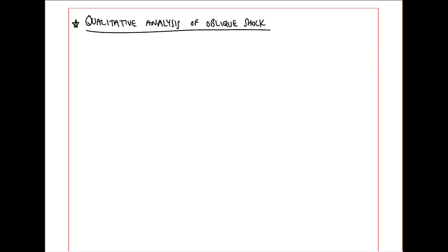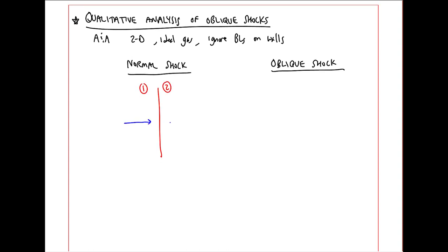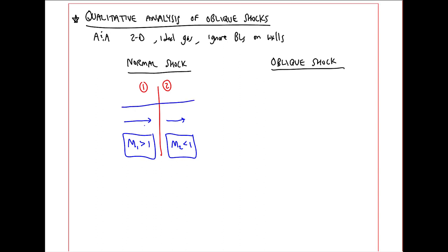First, let's do a qualitative analysis of oblique shocks. Our assumptions and approximations are 2D, ideal gas. We'll ignore boundary layers on walls so our flow will be isentropic except through the shocks. I'll compare a normal shock and an oblique shock. The normal shock from 1 to 2 with flow from left to right. We know that M1 is greater than 1 and M2 is less than 1. And the streamlines just go straight through the shock.